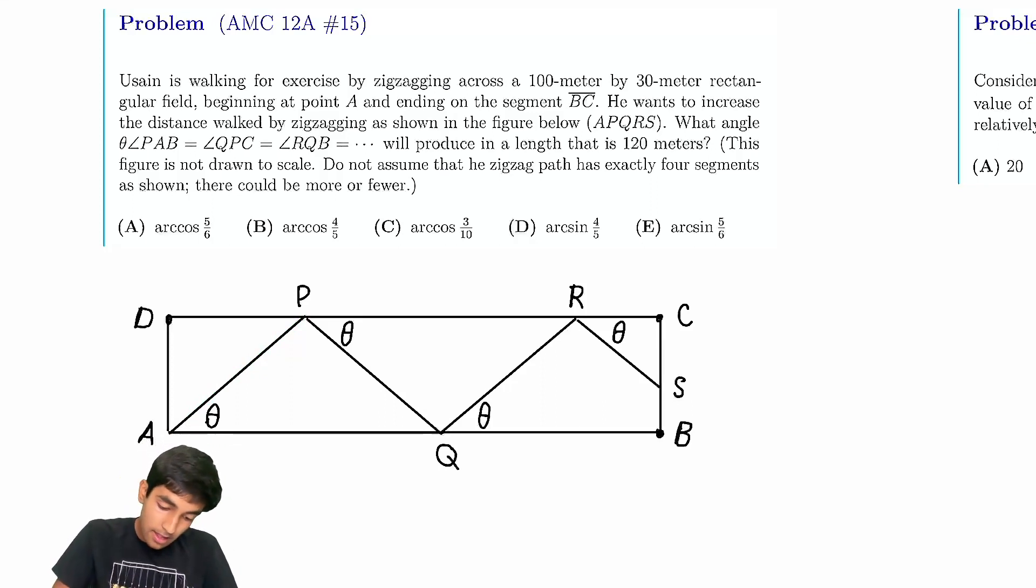So let's just say this is x meters, right? Then this thing will be x cosine of theta meters. This distance, just by basic trig.